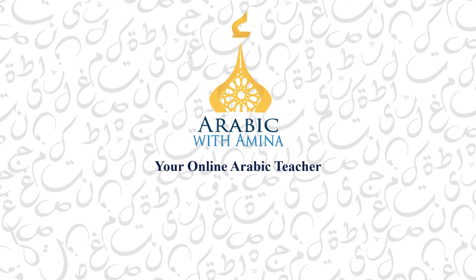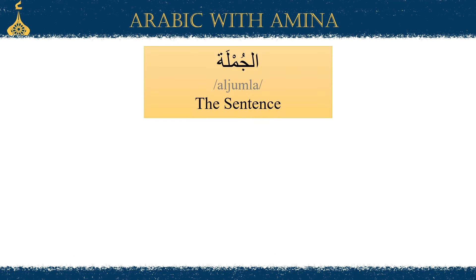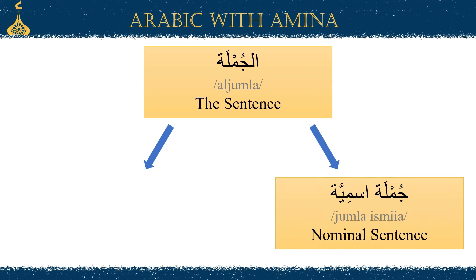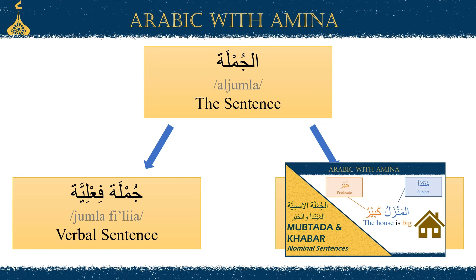Welcome back to Arabic with Amina. In this video we'll learn how to form verbal sentences. Al-jumla, or the sentence in Arabic, is of two types: there's a nominal sentence, jumla ismiya, and a verbal sentence, jumla fi'liya. This video we will be focusing on jumla fi'liya — I already have another video covering nominal sentences which you can find in the corner above.